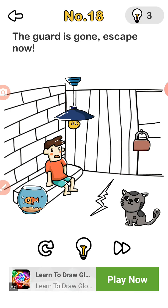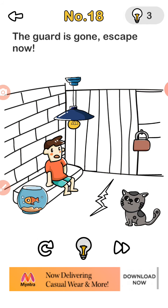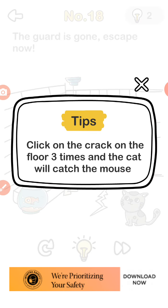That I've done so much, you know the guard is gone. Escape, click on the crack on the floor three times and the cat will catch the map.